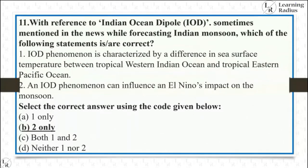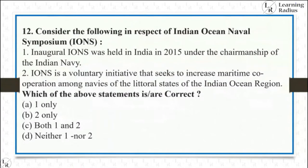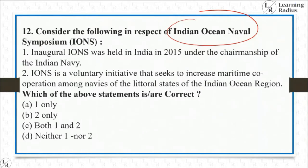With reference to Indian Ocean Naval Symposium (IONS): (1) Inaugural IONS was held in India in 2015 under the chairmanship of the Indian Navy — wrong, it happened in 2008; (2) IONS is a voluntary initiative to increase maritime cooperation among navies of littoral states of the Indian Ocean region — absolutely right. Second statement is right, first is wrong. Answer is B.